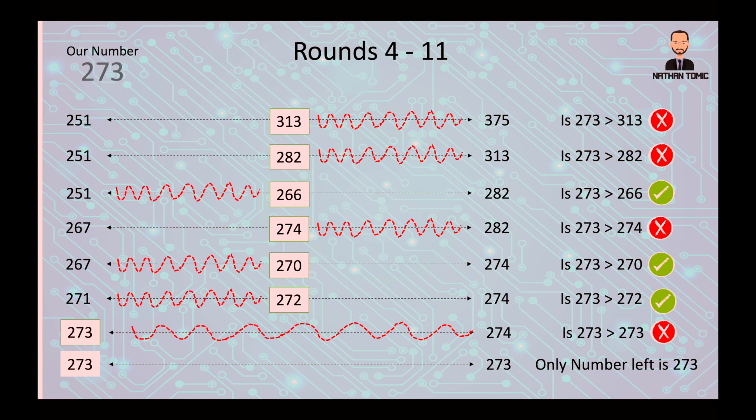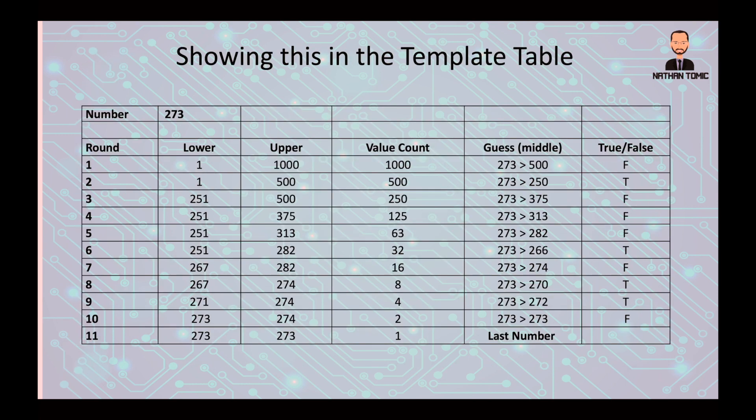How do we show that on the worksheet? How do we show this in a grid? Here I have the grid filled out. My number at the top I was guessing towards, 273. Round one, I started with 1 going up to 1000. That means I have 1000 possible values. My middle guess was 500 and it's not true, it's false. Round two, I had 1 to 500, 500 values to guess from. 273 greater than 250? Sorry, yes it is. We keep going through. Eventually we got down to the 11th round. 273 to 273. There's only one possible value, therefore it's the last number. It must be the correct guess.